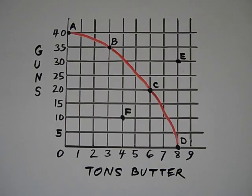And it works in reverse. If they want to produce more butter, they can, but that means they're going to have to give up the production of some guns. And that's what we call opportunity cost. It's your next best choice with your resources, with your factors of production.